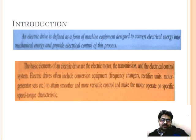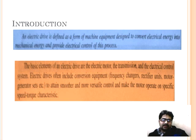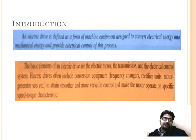An electric drive is defined as a form of machine equipment designed to convert electrical energy to mechanical energy and provide electrical control of this process. The basic elements of an electric drive are the electric motor, transmission, and electrical control system. Electric drives often include conversion equipment such as frequency changers, rectifier units, motor-generator sets, etc., to attain smooth and more versatile control and make the motor operate at specific speed-torque characteristics.